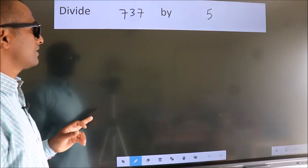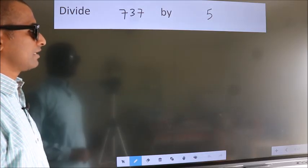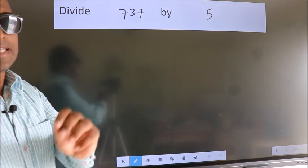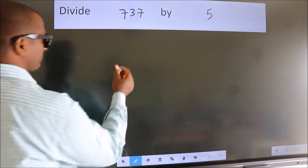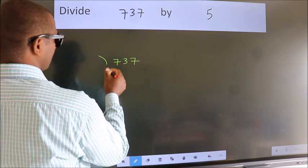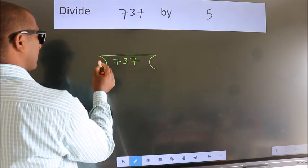Divide 737 by 5. To do this division we should frame it in this way. 737 here, 5 here.